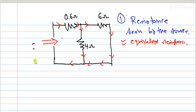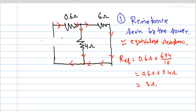The equivalent resistance is 0.6 ohm plus the parallel combination: 6 times 4 divided by 10, which equals 0.6 ohm plus 2.4 ohm, giving us 3 ohms total. The equivalent resistance seen by the source is 3 ohms.